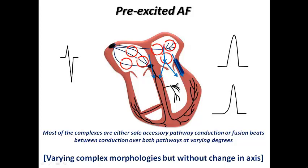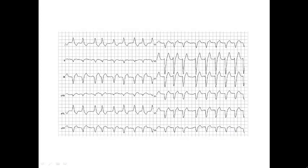So when I see irregular wide complex tachycardia with an extremely rapid rate, some very short RR intervals, and slight variation in complex morphology — I can be sure it is not AF with bundle branch block. Let's look at another example: this patient also has irregular wide complex tachycardia, but here the complex morphology is fixed, and the RR intervals are not very short. This patient has AF with left bundle branch block — left bundle morphology — and it is not pre-excited AF.